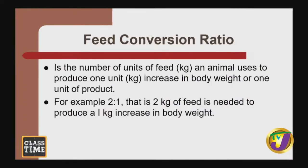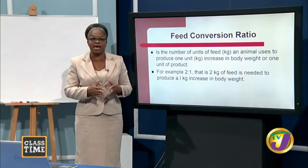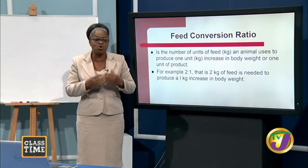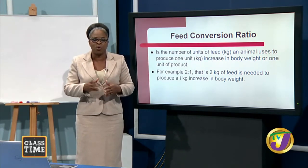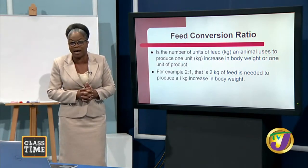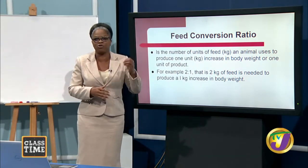Feed conversion ratio (FCR) is the number of units of feed per kilogram an animal uses to produce one unit kilogram increase in body weight or one unit of product. For example, if chickens have an FCR of 2 to 1, the chickens need to consume two kilograms of feed in order to put on one kilogram of weight. Knowing the FCR allows us to work out our budget based on the number of chickens we are going to raise, so we know how many bags of feed to buy and can compare proposed versus actual budget in the SBA.